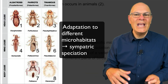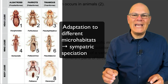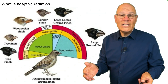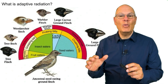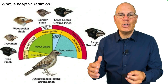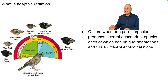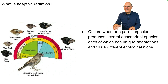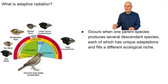So that's sympatric speciation in animals because of microhabitat adaptation. What is adaptive radiation? This is a concept we dealt with earlier when we talked about the evolution of homologous features. Adaptive radiation occurs when one parent species produces several descendant species, each of which has unique adaptations and fills a different ecological niche.